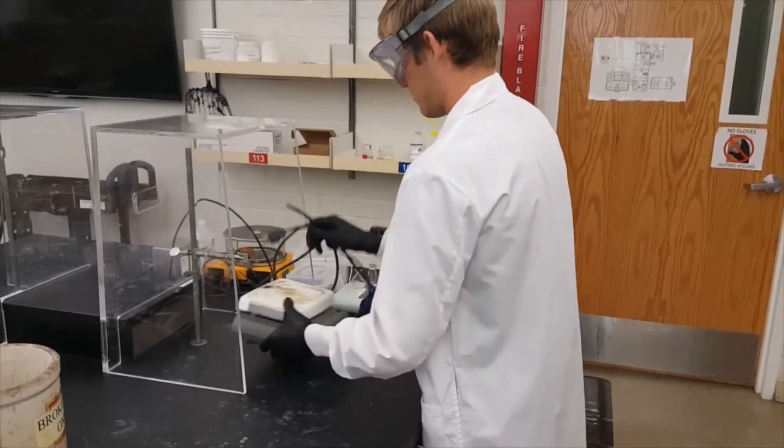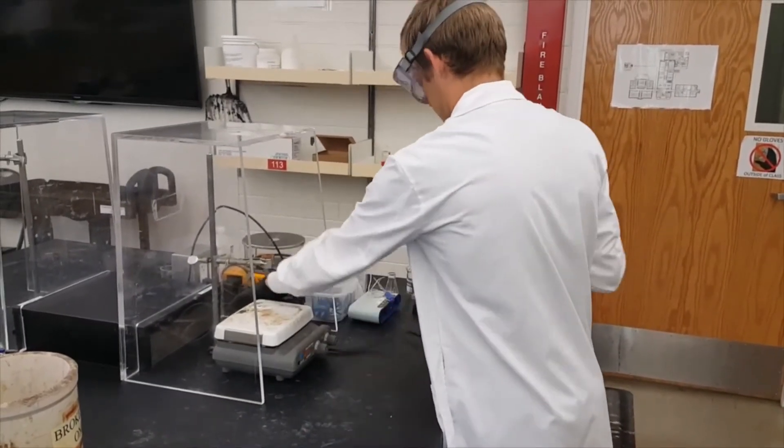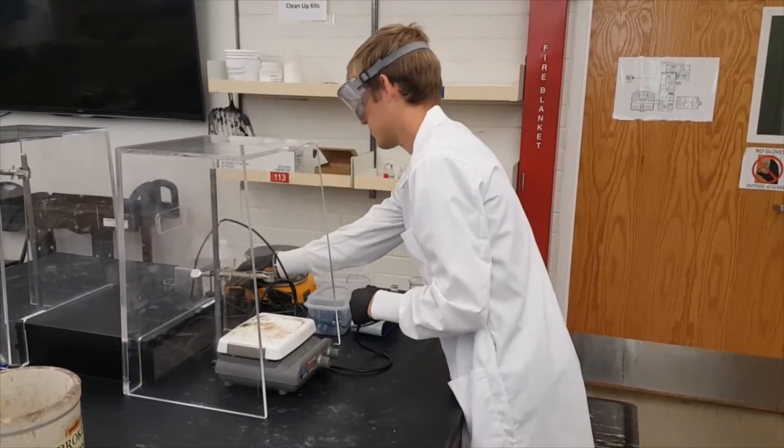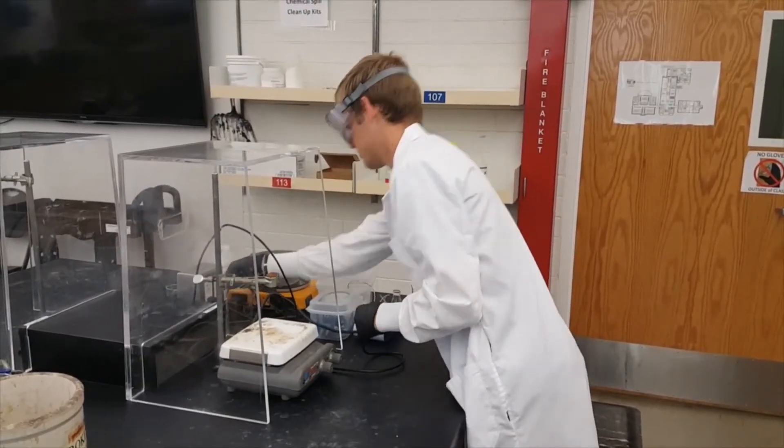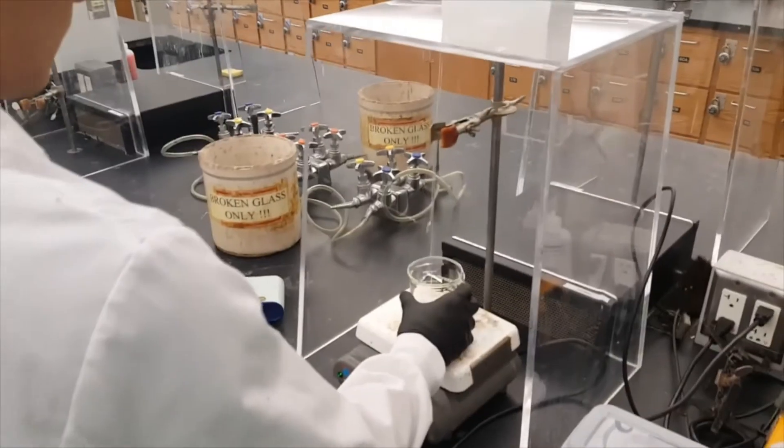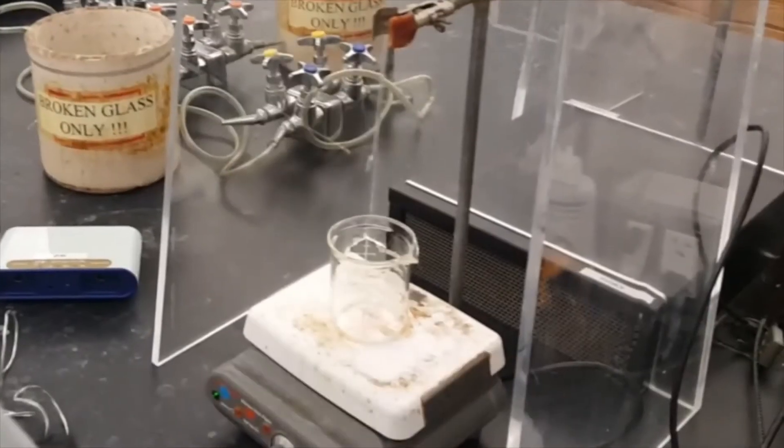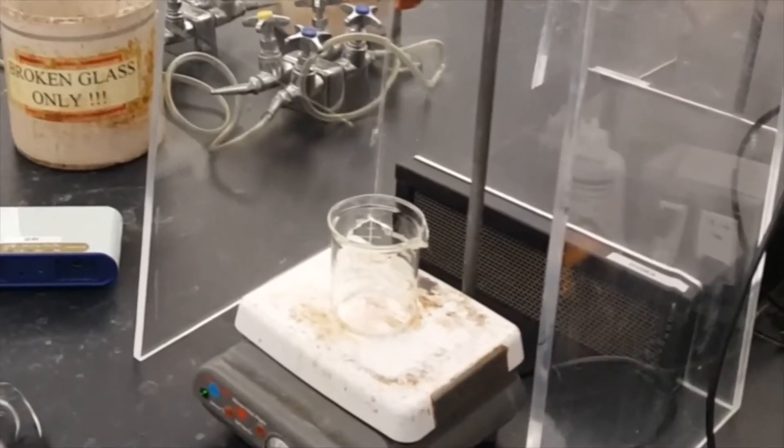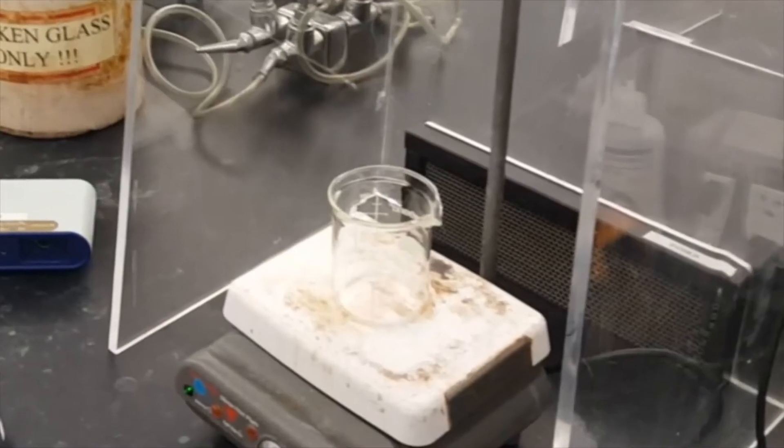First you'll want to place the hot plate under your personal downdraft hood and make sure that you can plug it in. Next place a 250 milliliter beaker on the hot plate. This is going to act as your water and ice bath when you're changing the temperature of your solution.